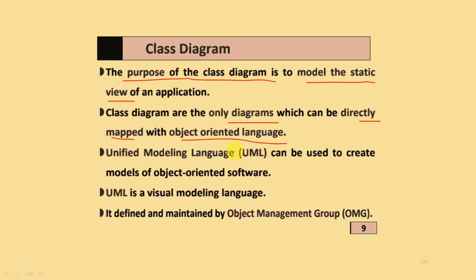UML modeling language can be used to create models of object-oriented software. UML is the visual modeling language. It is defined and maintained by the Object Management Group, that is called OMG.